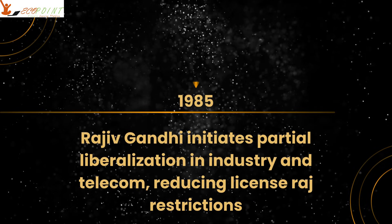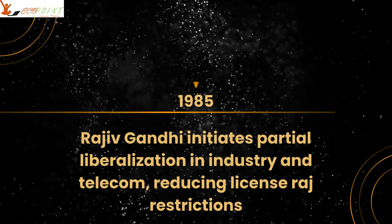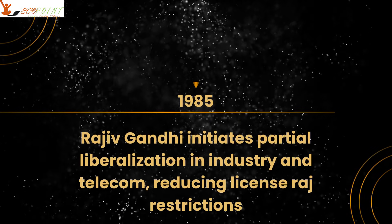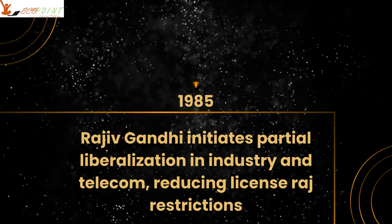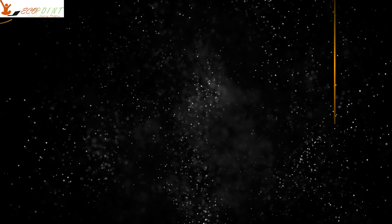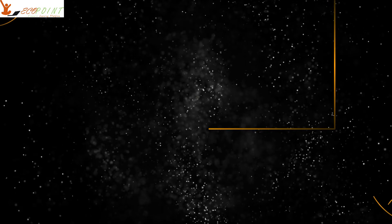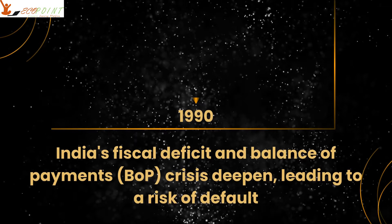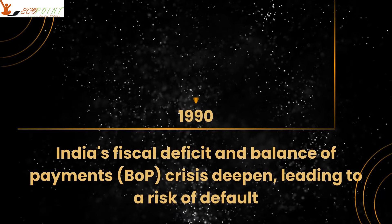In 1985, the Rajiv Gandhi government launched a partial piecemeal liberalization program. By 1990, India's fiscal deficit and balance of payments crisis had deepened.